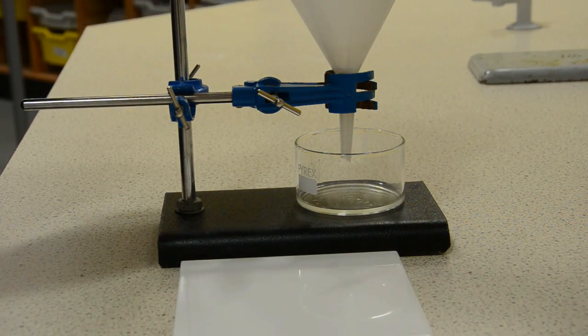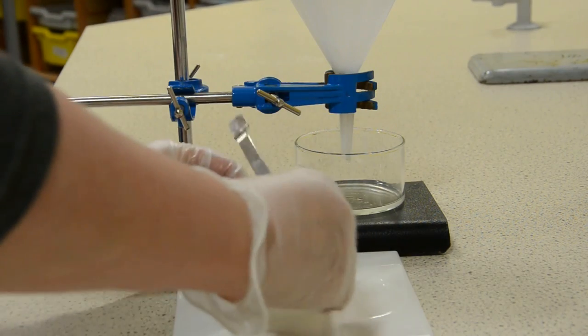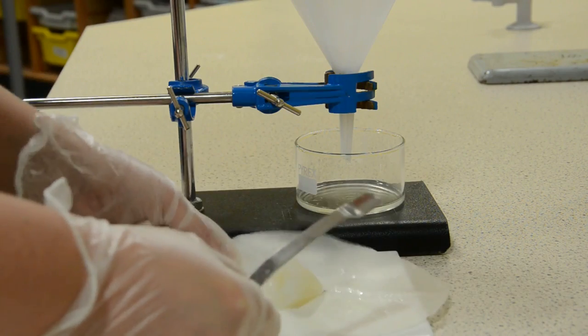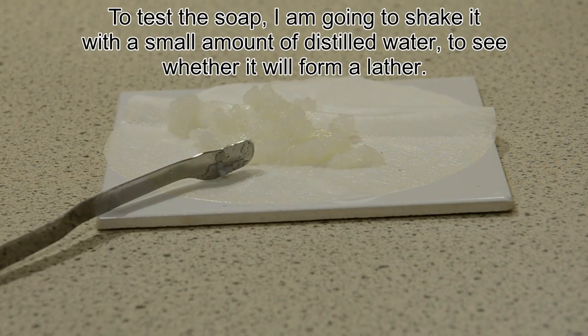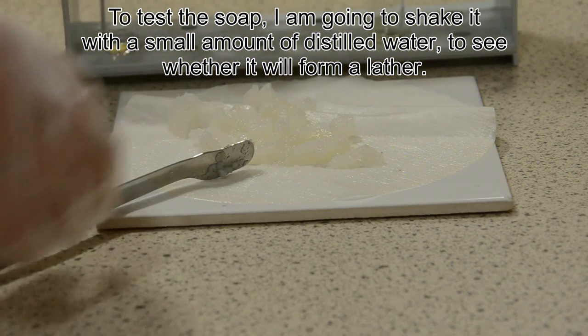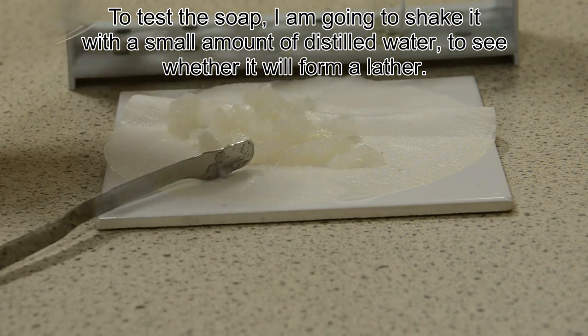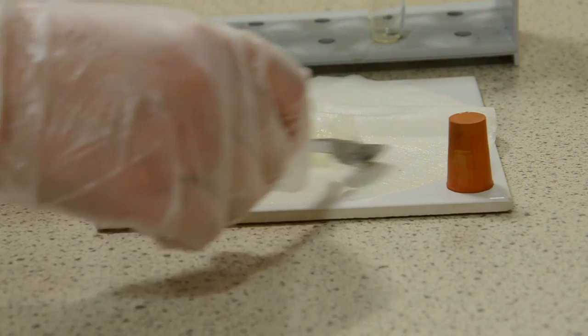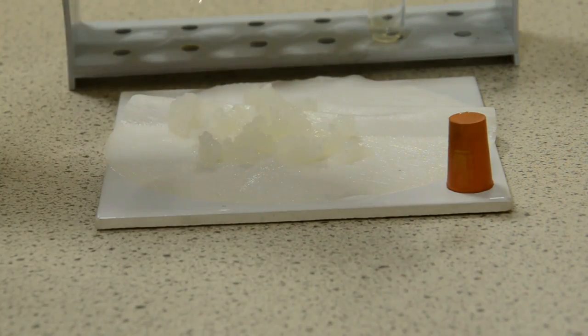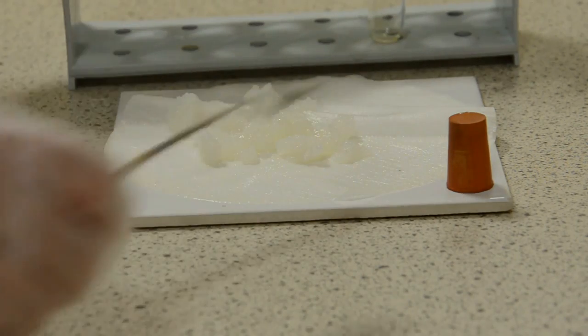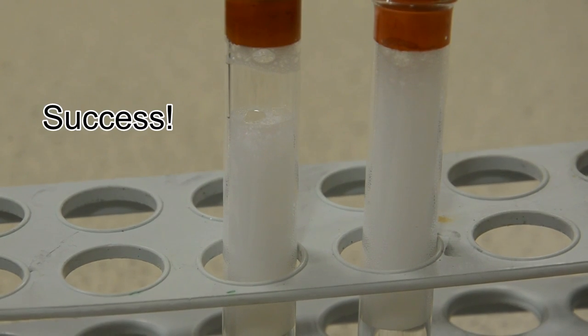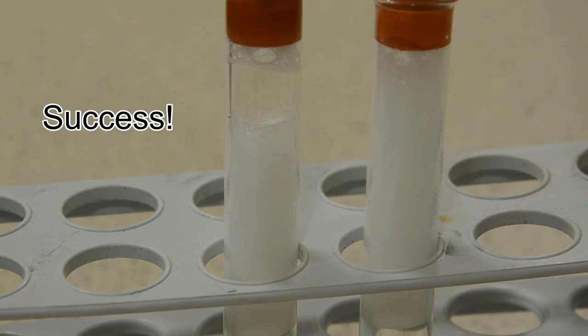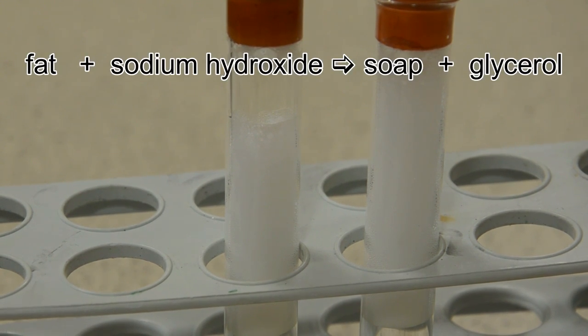And here's the final product. To test it, all we need to do is take a very small amount of distilled water and put a spatula full of our soap in it and shake it to see if it forms a lather. And it does, so we've successfully made soap. But it's important to note that I'm not going to wash with this. It still has very hazardous alkali in it.